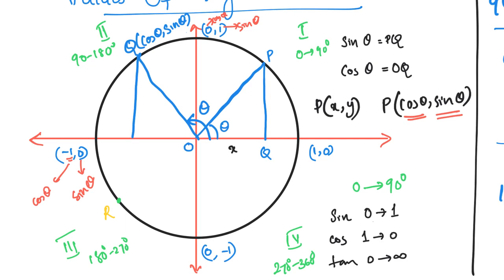The third point is R. Let's take point R. The coordinates of R are (cos theta, sin theta). This is the third quadrant. The third quadrant has a negative x-axis and negative y-axis — that is, the x-coordinate and y-coordinate are both negative.